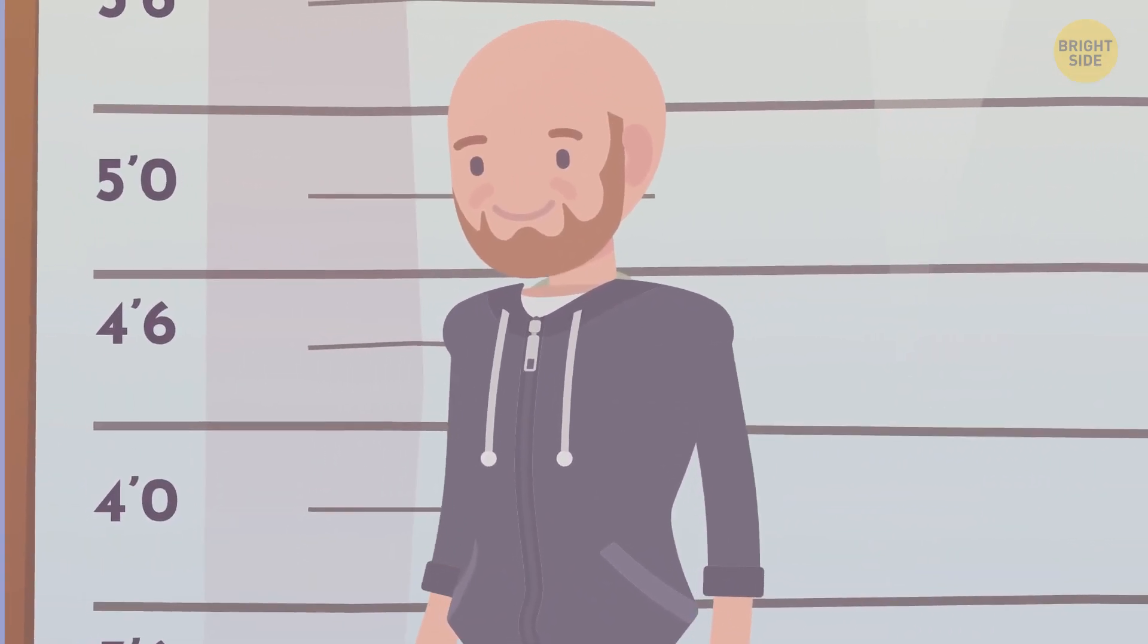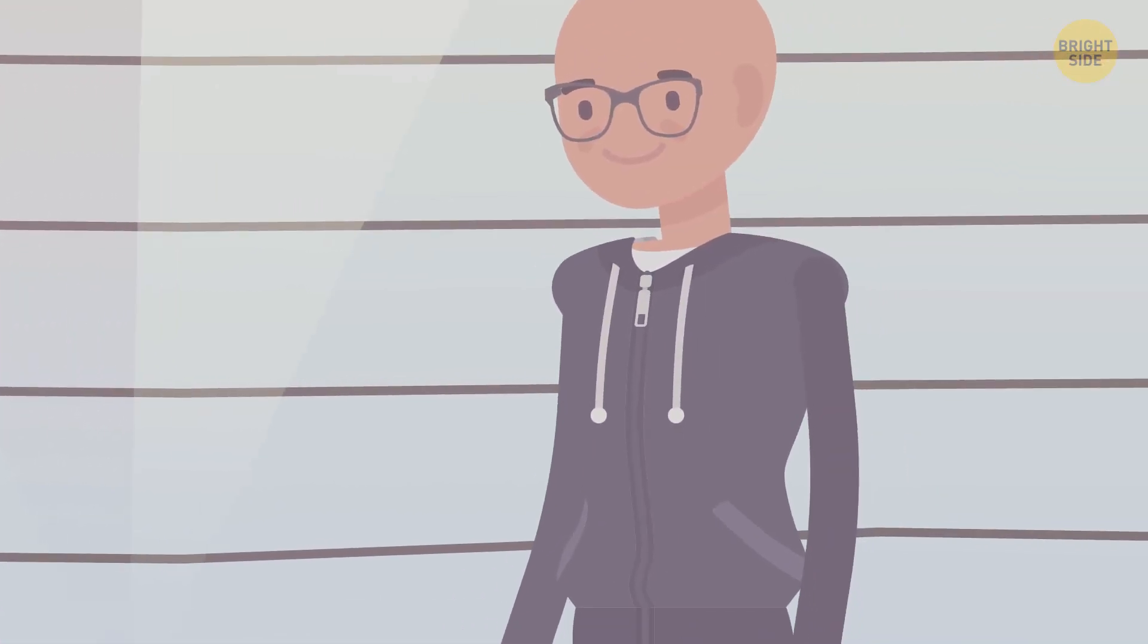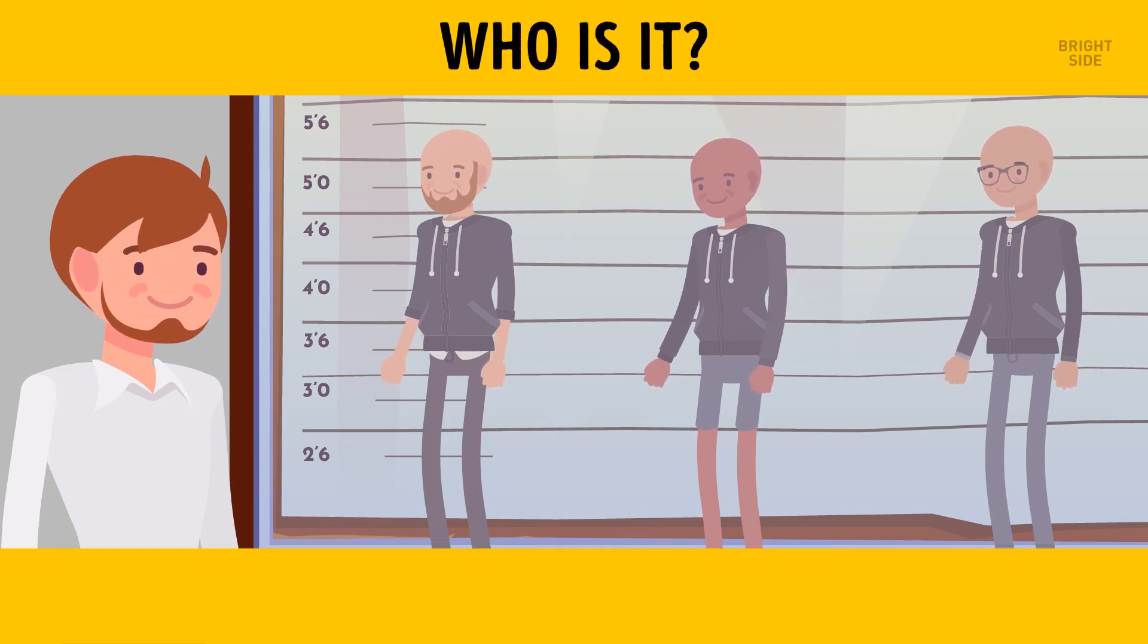Suspect number one has a beard. Number two is wearing shorts. And number three is wearing glasses. Gareth knows immediately who to arrest. Who is it?